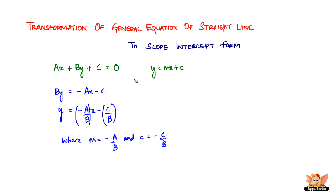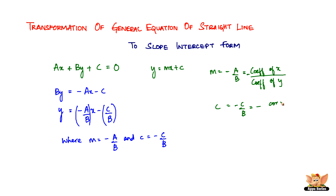So this is how you transform the general equation of the straight line to the slope-intercept form. To summarize: m equals minus a by b, which is the negative of the coefficient of x divided by the coefficient of y; and the intercept c equals minus c by b, which is the negative of the constant divided by the coefficient of y. That ends this video — I'll see you in the following videos with the transformation of the general equation of a straight line to the intercept form.